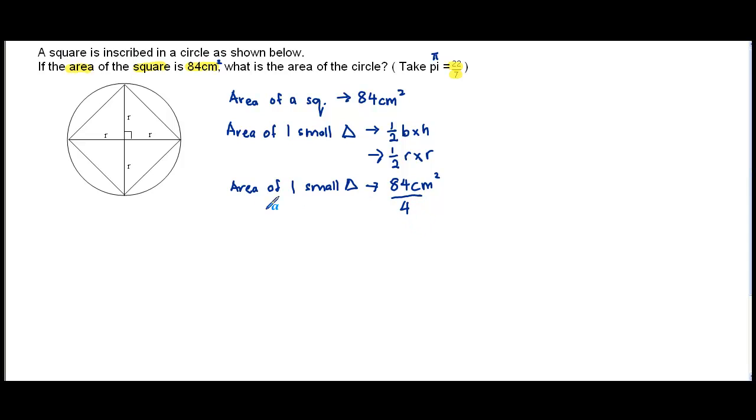And we shall leave it as that, because for the next statement, we are going to equate half R times R with 84 divided by 4. So this would be R times R. We shall use the equal sign then. Equals 84 over 4 divided by half, because you bring over the half over to this side.